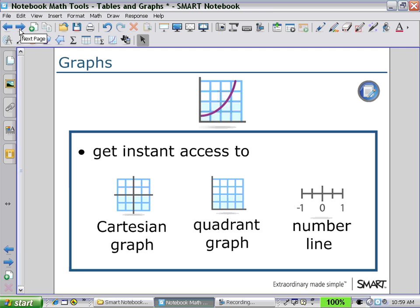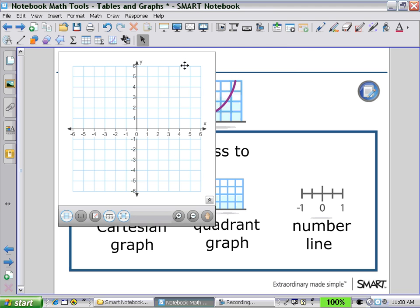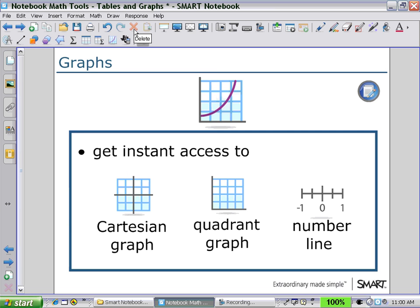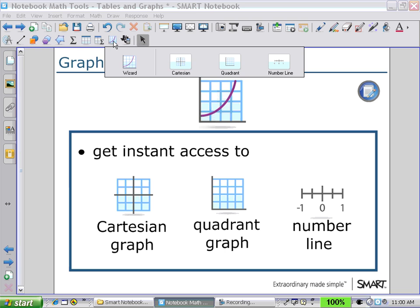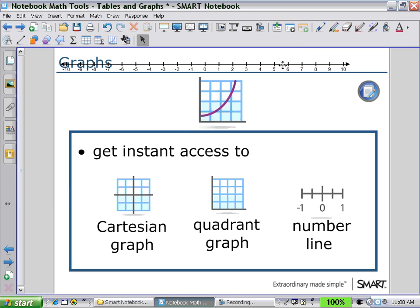With the graph tools, we have instant access to a variety of graphs. So by just selecting the graph icon on the secondary or math toolbar, we could choose a Cartesian graph. Or we could choose our quadrant graph. Or we also had instant access to a number line.